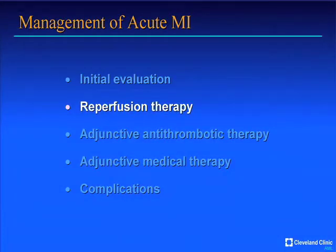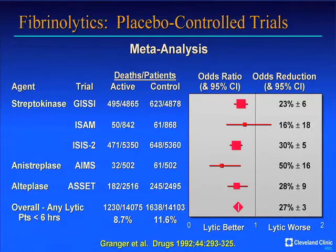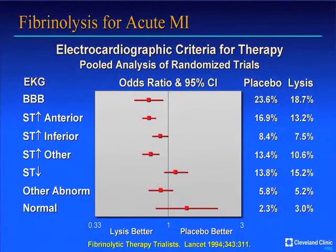Reperfusion therapy is the cornerstone and the reason why it is important to make the initial discrimination between ST elevation and non-ST elevation ACS. It's based upon five placebo-controlled landmark trials of fibrinolytic agents showing that streptokinase, APSAC, anistreplase, and an old regimen of alteplase (TPA) achieved reductions in 30-day mortality of as much as 30%, particularly in patients treated within the first six hours. Pooling of these studies by the Fibrinolytic Therapy Trialists allows a better understanding of which patients do and do not benefit.